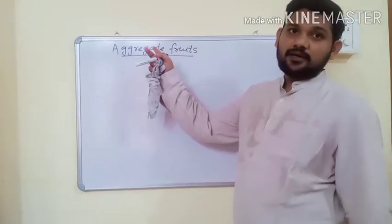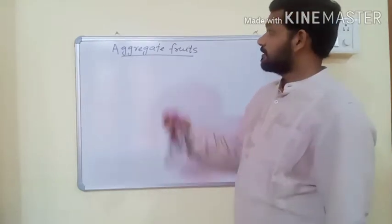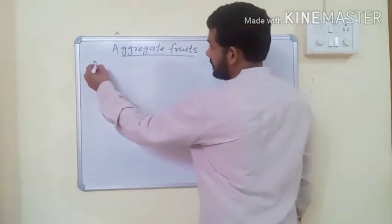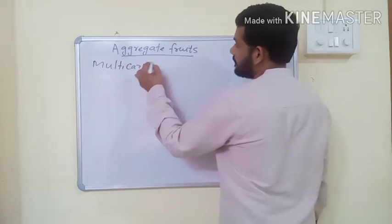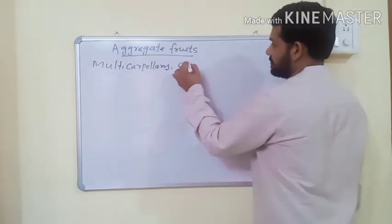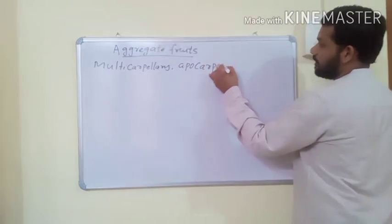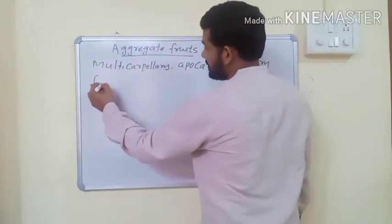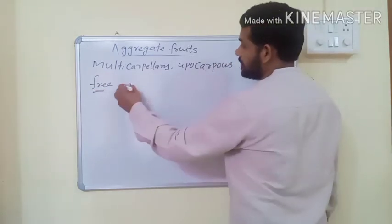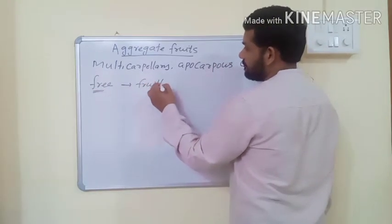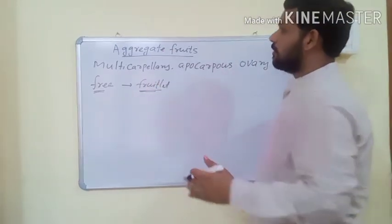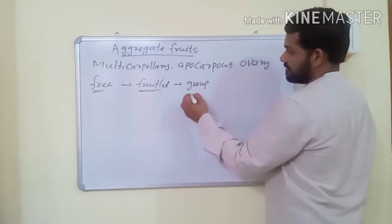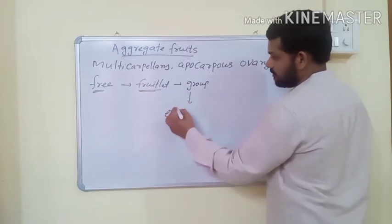We will discuss another type of simple fruits - aggregate fruits. Aggregate fruits develop from multicarpellary apocarpous gynoecium or apocarpous ovary. An apocarpous ovary means all the carpels are free, and each carpel develops into a fleshy organ known as a fruitlet. A group or bunch of fruitlets is known as an etaerio.